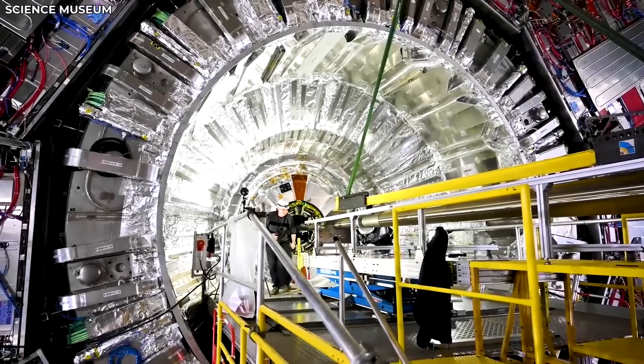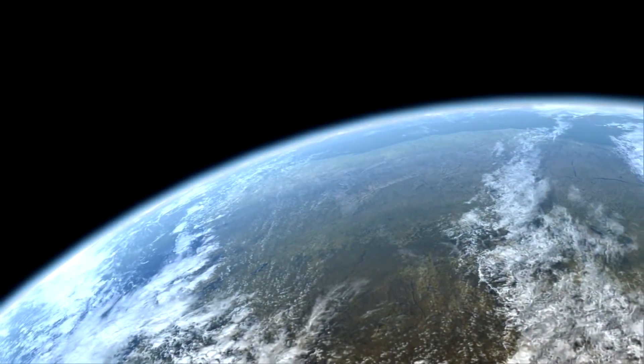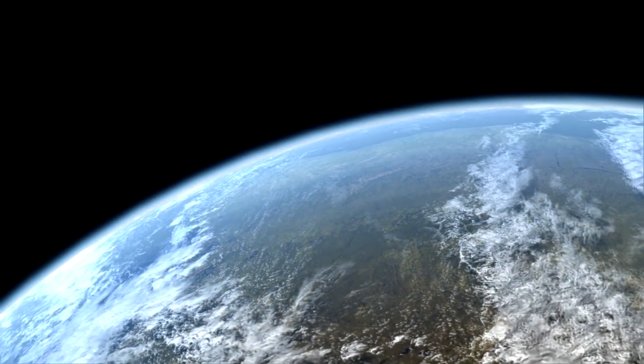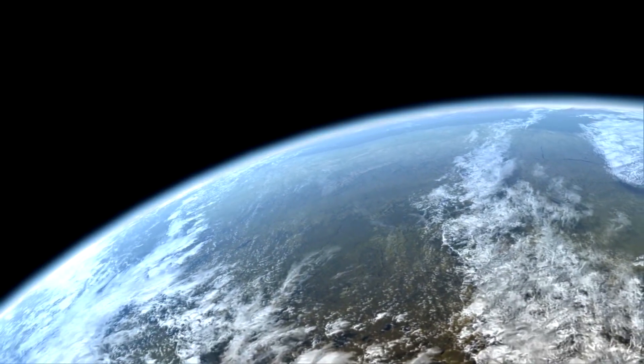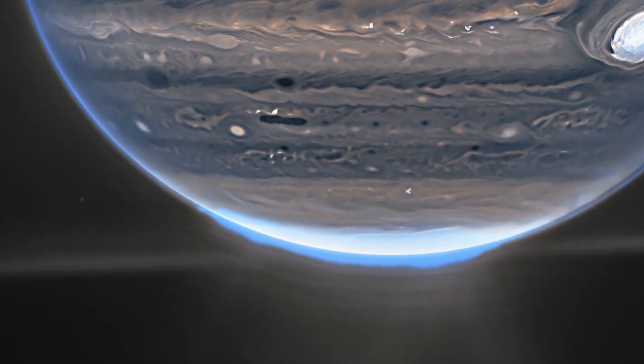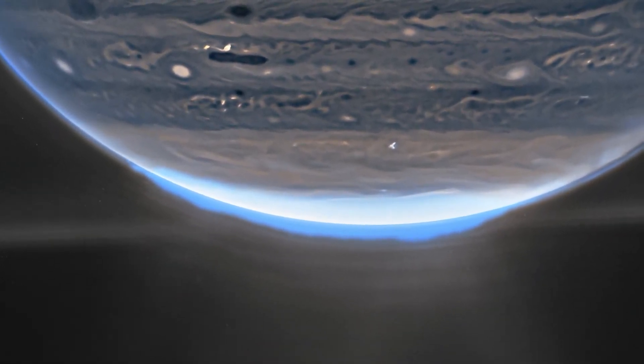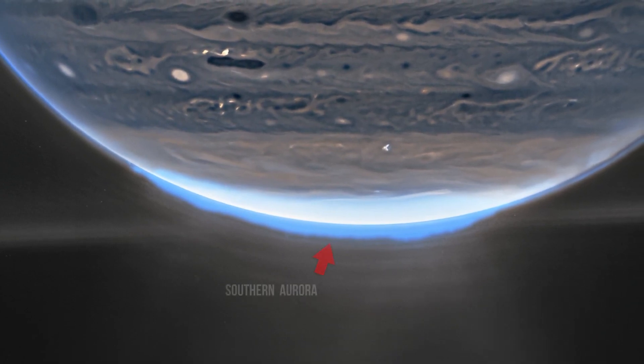The original image captured by JunoCam was captured on July 20, 2019 at 9:37 p.m. during the 21st close flyby of Jupiter that the Juno spacecraft was performing. The spacecraft was approximately 27,000 miles away from the planet's cloud tops when the image was captured and it was located at a latitude that was approximately 47 degrees south.